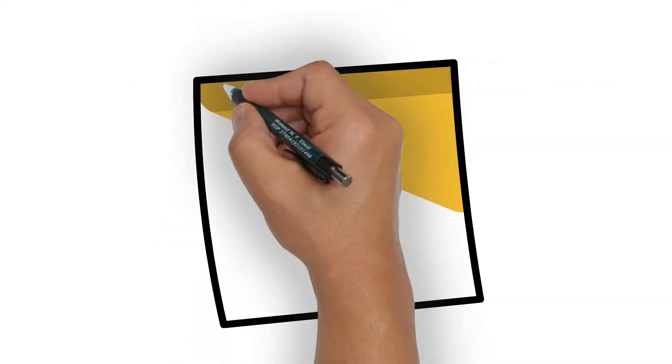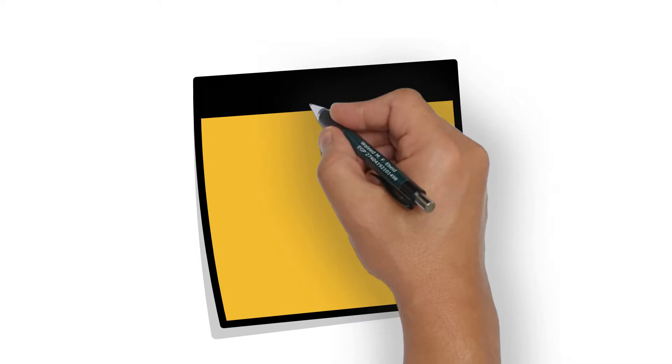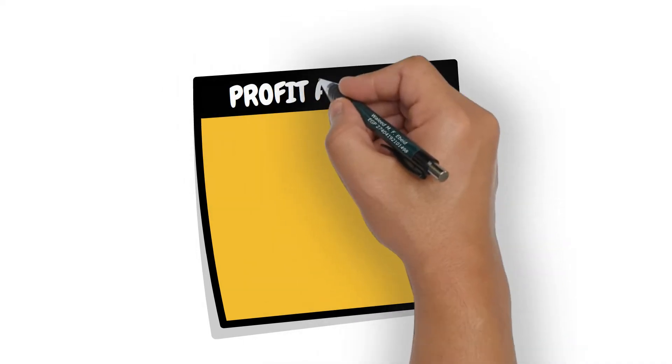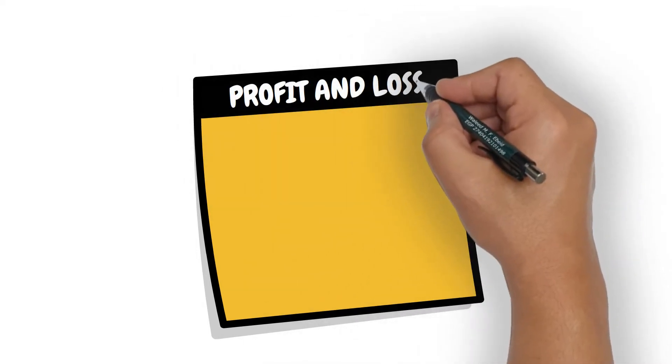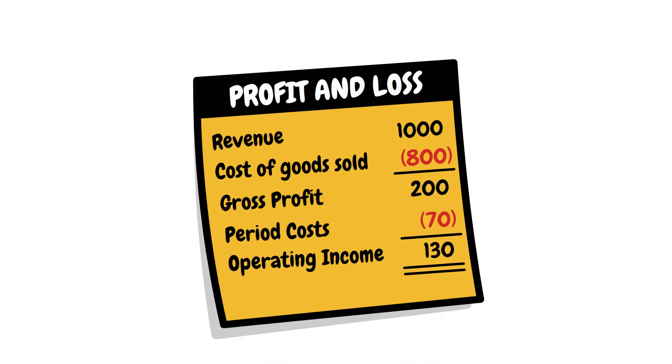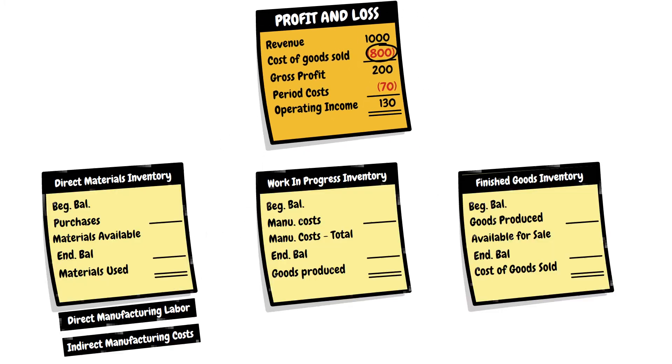Let us emphasize the previous video with numbers. This is the profit and loss statement of XYZ company with 800 as cost of goods sold, and here is how this figure was reached.